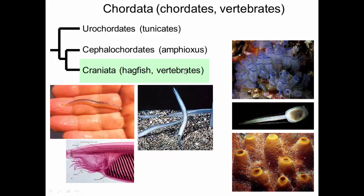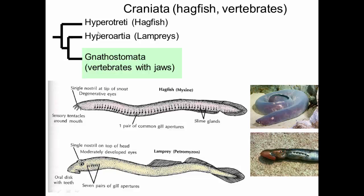Craniata includes hagfish and vertebrates. If we're going to be naming with monophyletic groups, we would technically include all the vertebrates within Craniata, but let's not worry about that right now. The most basal of these groups are hagfish. A hagfish does not have a lower jaw — it just has an upper jaw. It doesn't really have eyes, it doesn't have limbs. It's not a very sophisticated-looking organism, but hagfish have been evolving as long as everything else and they have their own superpower.